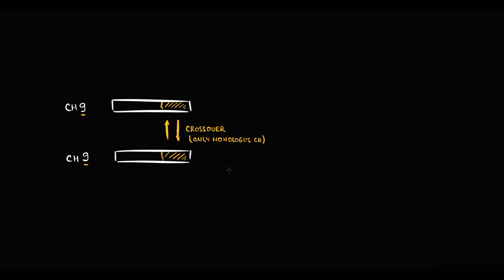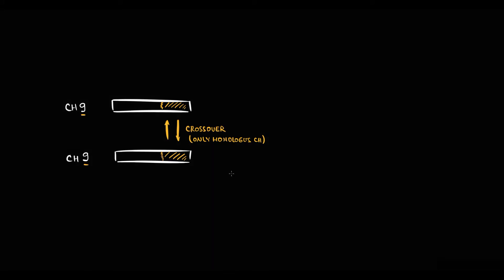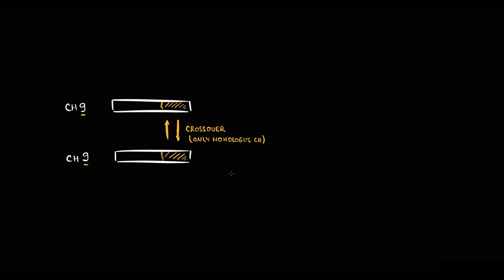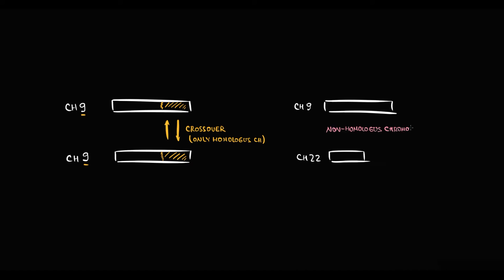So chromosome 9 can switch genetic information only with another chromosome 9. But chromosome 9 cannot make a crossover with chromosome 22, for example, because in normal conditions the crossover between different chromosomes is impossible.